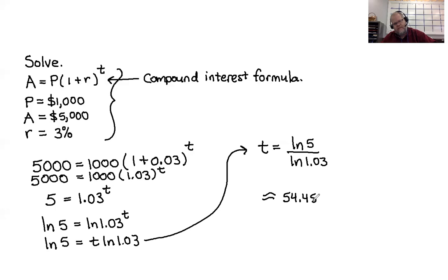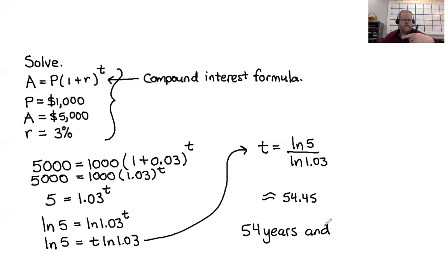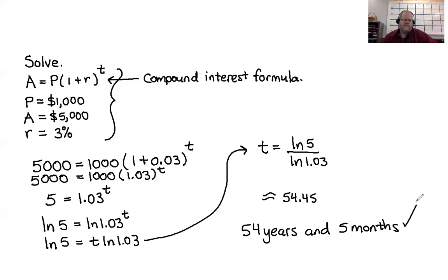Going to two decimal places, that's 54.45. So 54 years — and for the months, take the decimal 0.45 and multiply by 12, which gives five months. Discarding any remaining decimal, it will take 54 years and 5 months for $1,000 to grow into $5,000 at 3% annual interest.